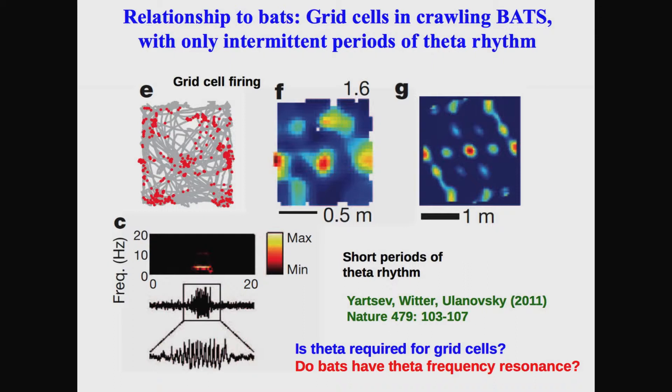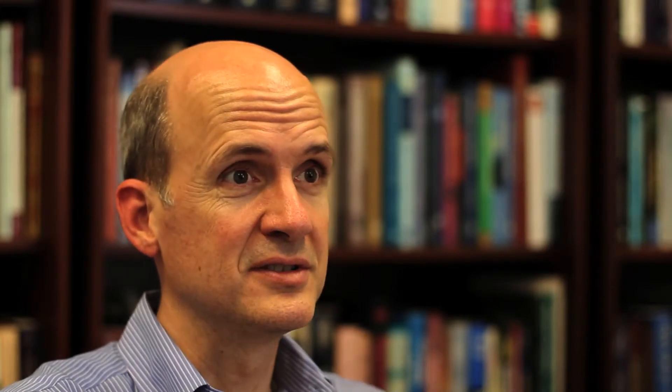This is actually somewhat similar to what has been found in humans and monkeys when looking at theta rhythm oscillations. The Israeli group argued that this suggested the continuous oscillations present in the rat are not the mechanism for generating grid cells, and that there might be a different mechanism for generating grid cells in the bat.